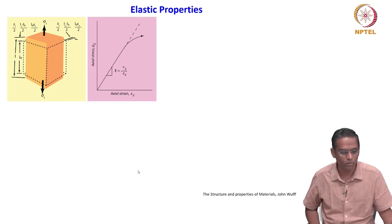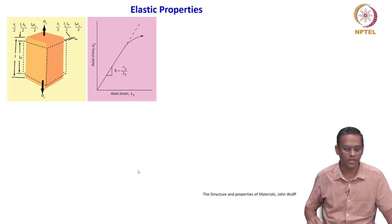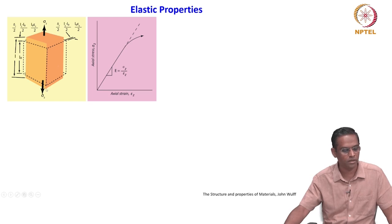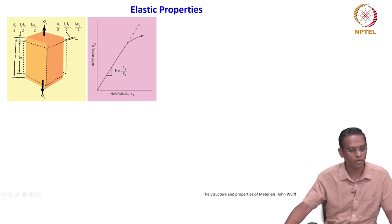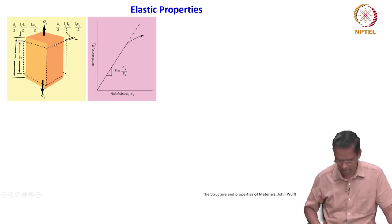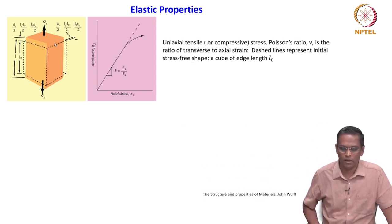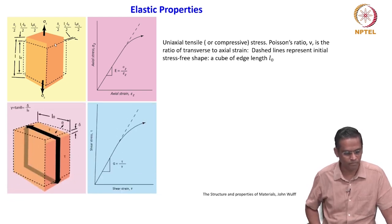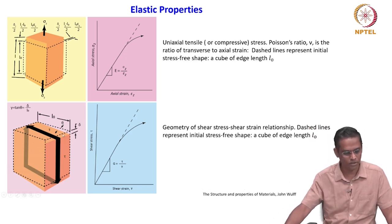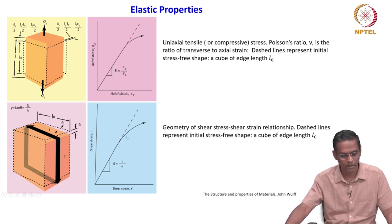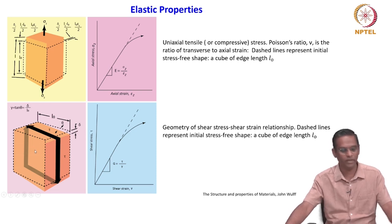The diagrams shown now explain geometrically what we have just seen in terms of elastic behavior. This is a member which undergoes tensile deformation — you see that L naught becomes L after the deformation, you calculate the displacement, and from there you calculate the stress and strain. Similarly, the shear stress-shear strain relationship is shown geometrically. What you arrive at is E is equal to sigma z divided by epsilon z in the z direction, and G is equal to tau by gamma.